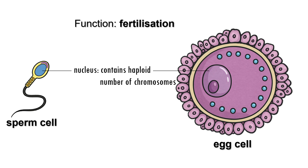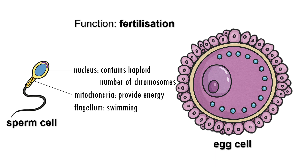One of the key adaptations of a sperm cell is the flagellum, which acts like a tail and allows the sperm to swim through the uterus and fallopian tube to reach the egg. Its streamlined shape helps it swim efficiently. Additionally, sperm cells contain many mitochondria, which provide the energy required for movement. At the front of the sperm cell is the acrosome, which contains digestive enzymes that help break through the outer layers of the egg so that fertilization can occur.